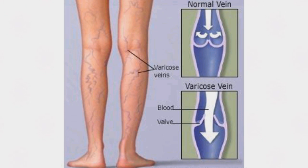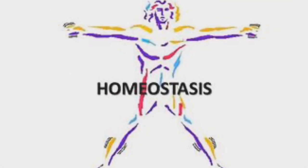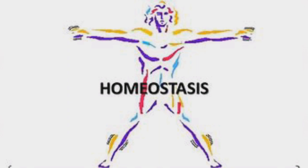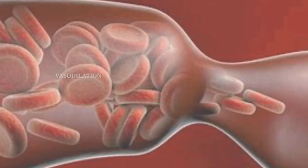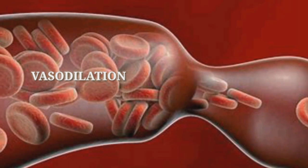This condition leads the body's homeostasis system to increase pressure in the veins by various means, such as the effects of vasoconstrictors and vasodilators in the body.